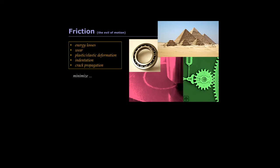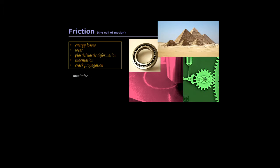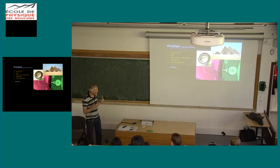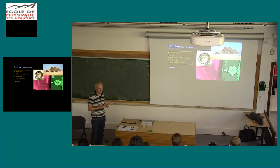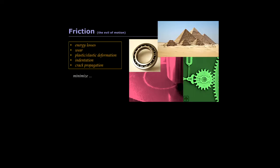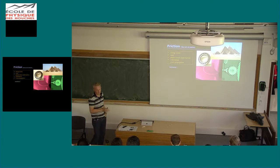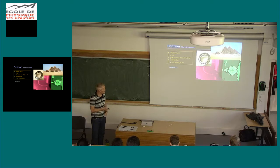Friction occurs whenever you have two surfaces in relative motion. In industrialized countries, about 10% of GNP is spent compensating for frictional losses — partially energy losses, but friction can also lead to severe damaging of devices, cause device failure, and make cracks propagate. That's the reason why friction has been investigated for a long time.